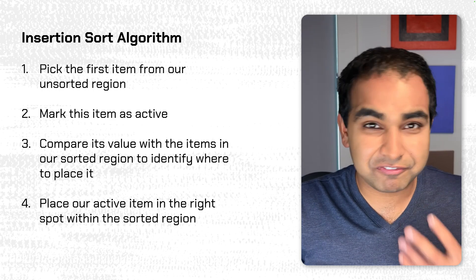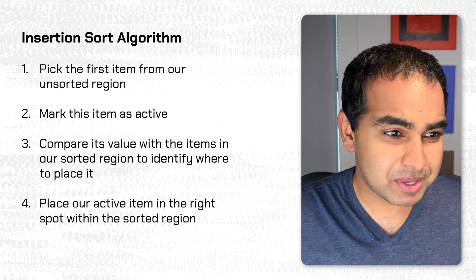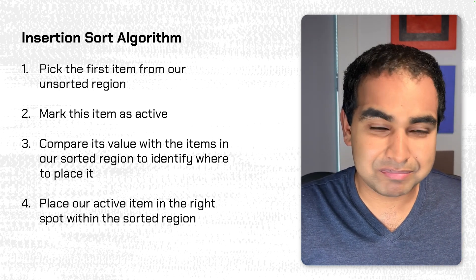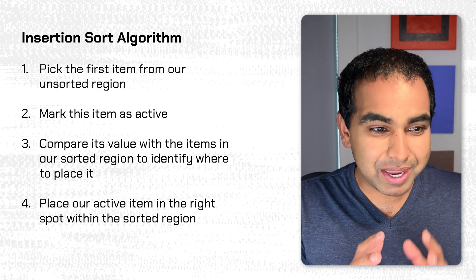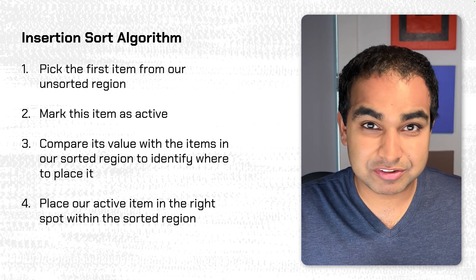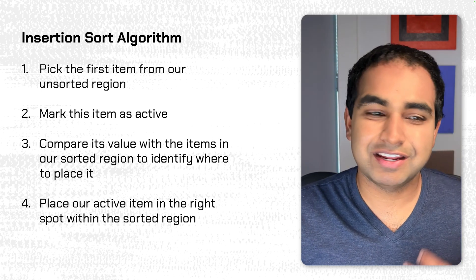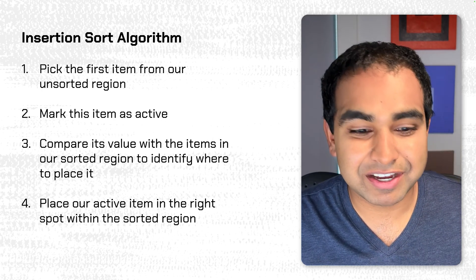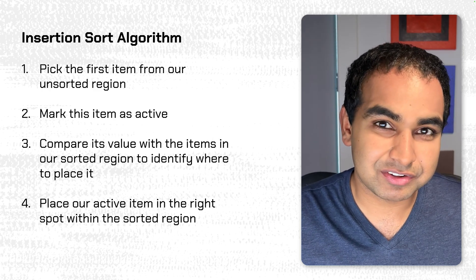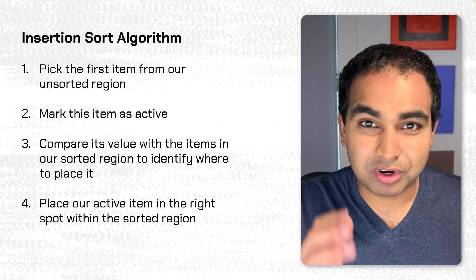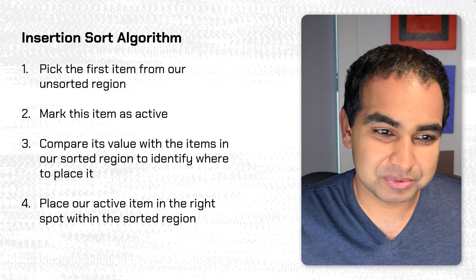Step one: pick the first item from our unsorted region. Mark this item as active is step two. Step three: we compare its value, the active item we just picked, with the items in our sorted region to identify where to place it. And in step four, we place our active item in the right spot within the sorted region to maintain the order we're looking for, which is smallest to largest.